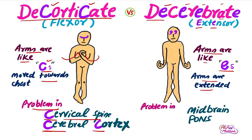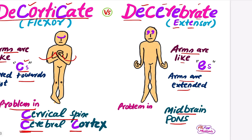In decerebrate rigidity, the problem is in the midbrain or pons. So to recap: in decorticate rigidity, the problem is in the cervical spine or cerebral cortex; in decerebrate rigidity, the problem is in the midbrain or pons.